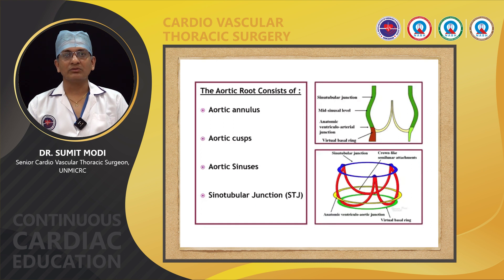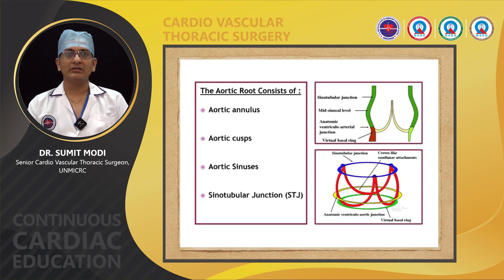What consists of the aortic root? It consists of four structures: the aortic annulus, the aortic cusp, the aortic sinus, and the sinotubular junction.